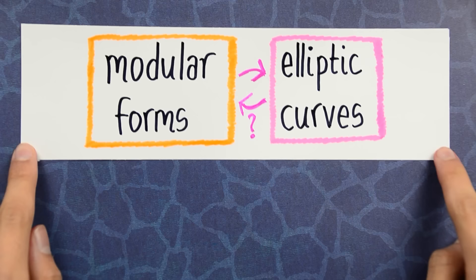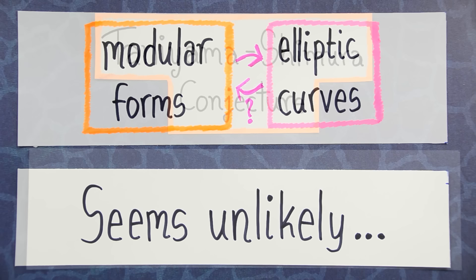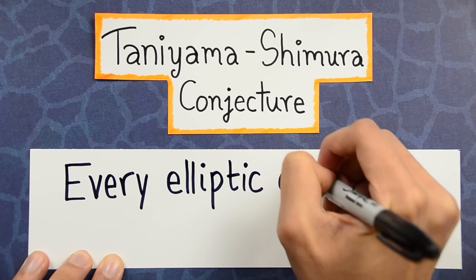Now when you first hear this, a reasonable reaction is that it seems very unlikely. But in 1967, this feeling was formalized into a conjecture that became known as the Taniyama-Shimura conjecture.